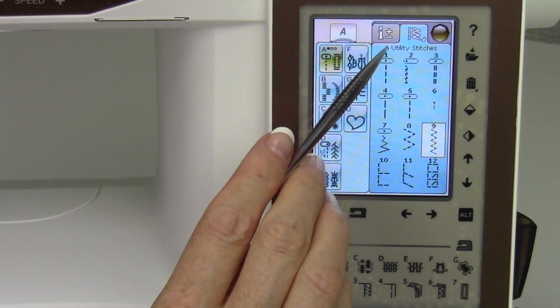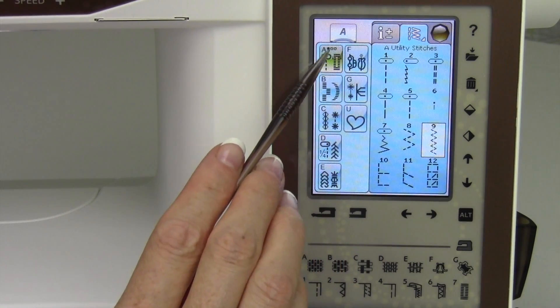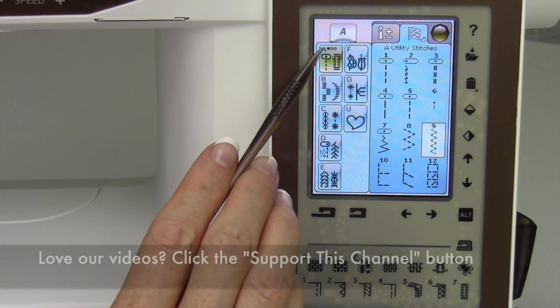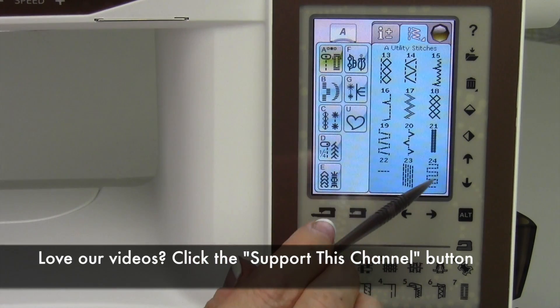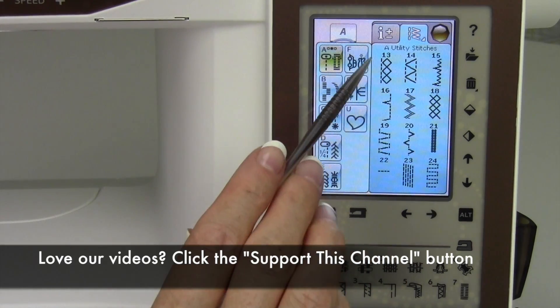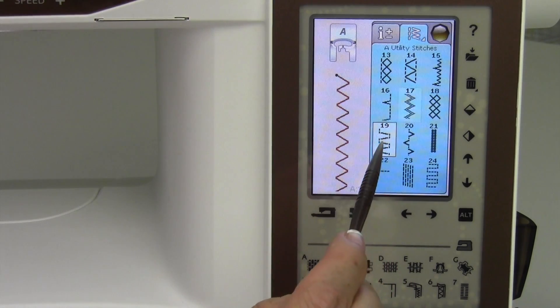Now when you take a look at our utility stitches in our menu A, you'll notice that right here there's three little bubbles. The first bubble is highlighted, so if you touch it again, you have the next twelve stitches, stitch thirteen through twenty-four. When I select one, it will then be picked.